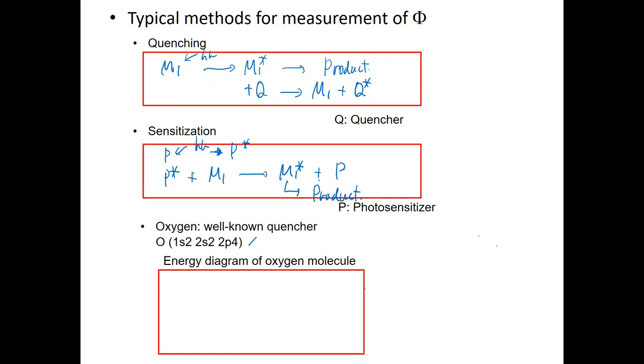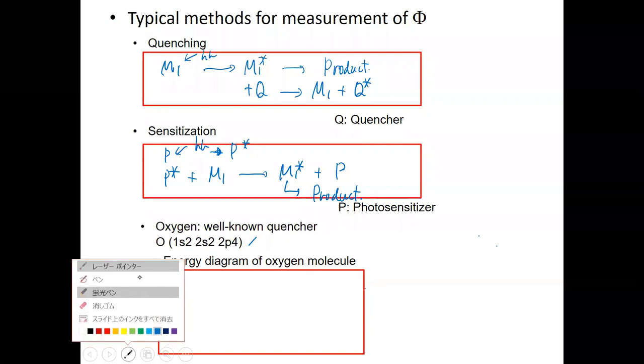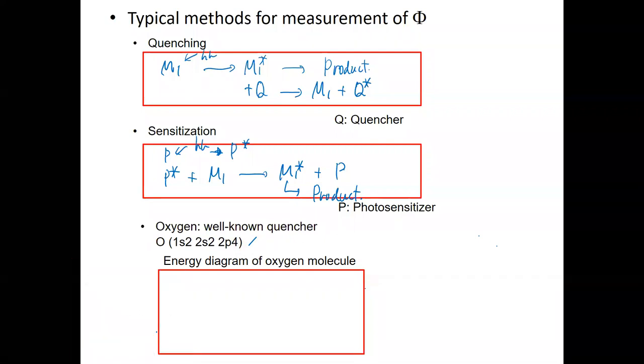And as one of the most famous quencher I will show is oxygen. So oxygen is a well-known quencher, not only for photochemical reaction but also some other chemical reactions. And if you have some chemical science experience, in many cases oxygen is removed. Here's the reason.